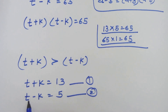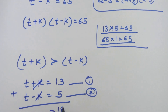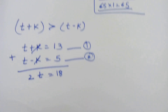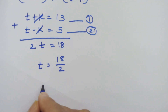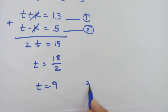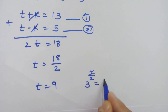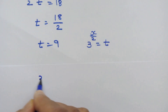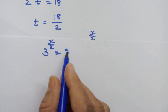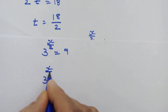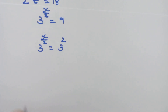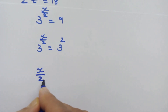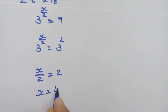Adding equation 1 and equation 2, the k terms cancel and we get 2t is equal to 18, so t is equal to 9. We had taken 3 raised to x upon 2 equal to t, so 3 raised to x upon 2 is equal to 9. Since 9 is 3 squared, we write 3 raised to x upon 2 equals 3 squared. With the same base on both sides, we compare exponents: x upon 2 is equal to 2, so x is equal to 4.